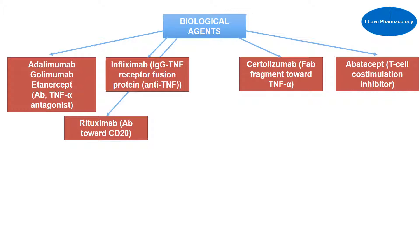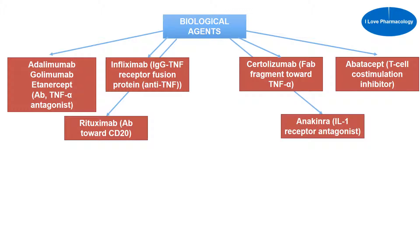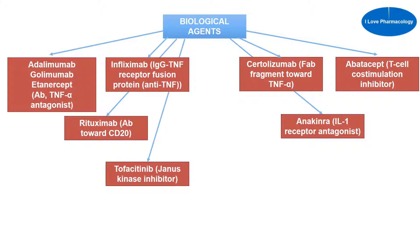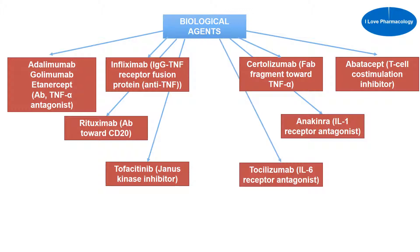Next we have rituximab, which is an antibody against CD20. Next we have anakinra, which is an interleukin-1 receptor antagonist. Next we have tofacitinib, which is a Janus kinase (JAK) inhibitor. Next we have tocilizumab, which is an interleukin-6 receptor antagonist.